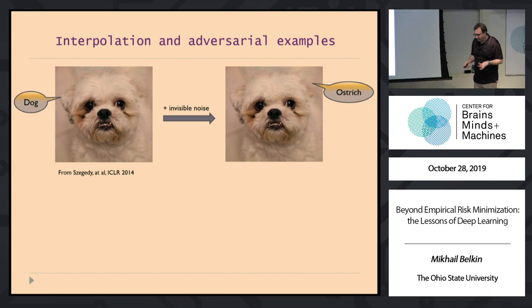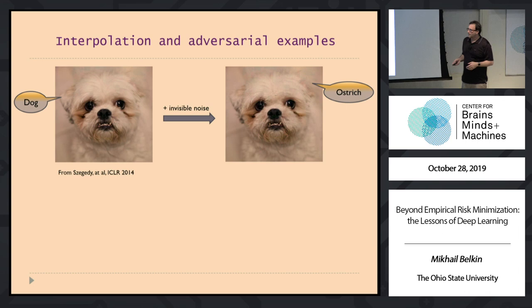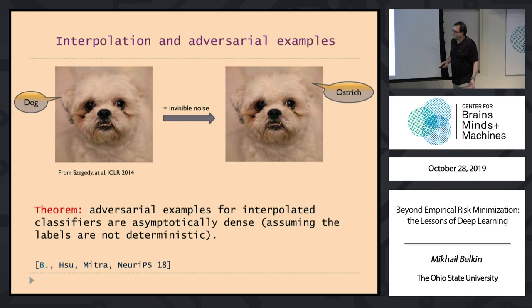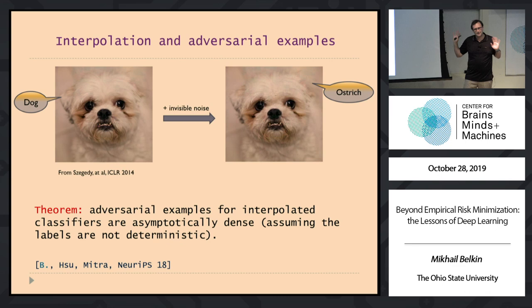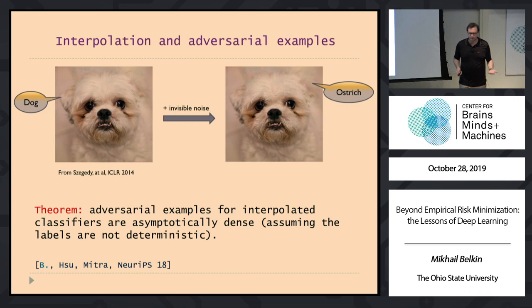A corollary of this concerns adversarial examples. You take an image, a neural net classifies it correctly as a dog, you add invisible specially selected noise, and now it's an ostrich. With this kind of analysis, it's pretty obvious that if you have any label noise you will expect to see a set of adversarial examples — misclassified points which are everywhere dense, like rationals are dense in the reals. I'm not saying this is the mechanism in real life, but they do follow directly from the analysis assuming label noise.